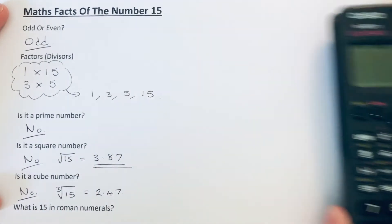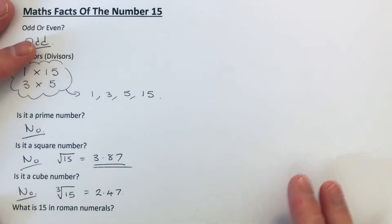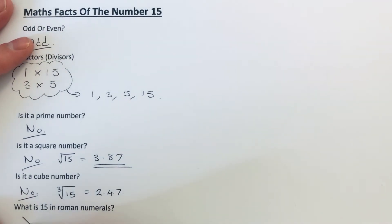What is 15 in Roman numerals? We can write that with an X for 10 and a V for 5.